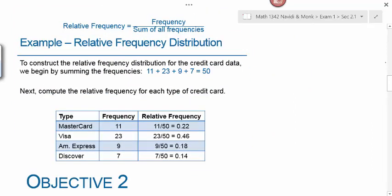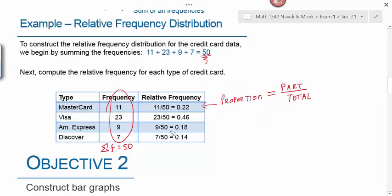To construct the relative frequency distribution for the credit card data, we begin by summing the frequencies. The total of this column right here gives you the total of items that were in your data set. Then, if you take each number in this category and divide by that total, you get the proportion or the relative frequency. This symbol right here is a capital sigma. It means summation in statistics. If I wanted to change this decimal to a percent, what would I do? Multiply by 100 and put a percent on it.